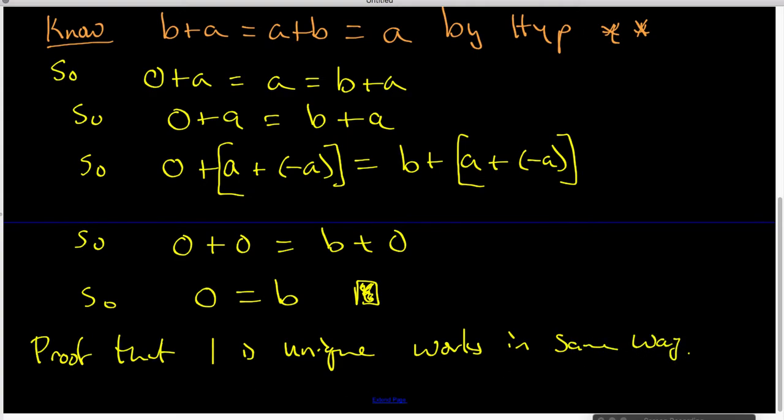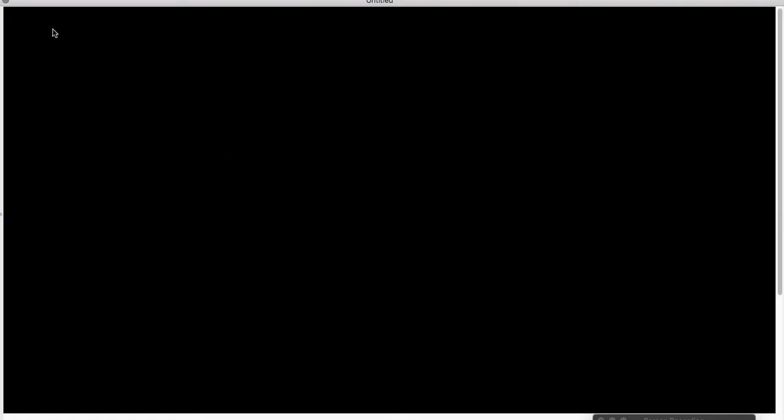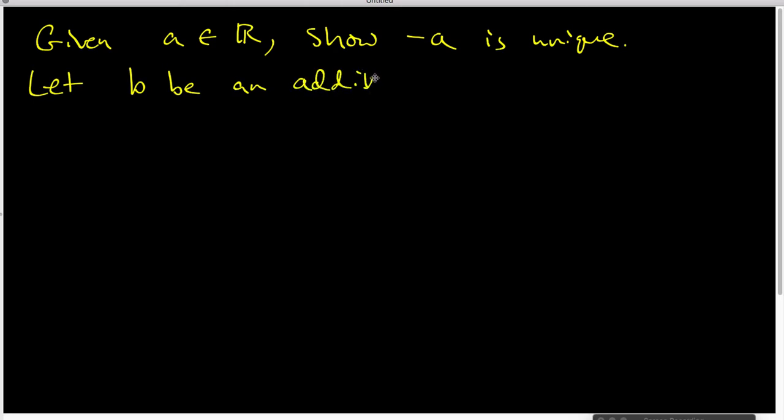So now what I want to do is I want to turn my attention to proving that additive inverses are unique. So given A inside the reals, I want to show that -A is unique. Now again, what I'm going to do is think about what happens to be another additive inverse. In other words, I'm going to let B be an additive inverse for the element A.